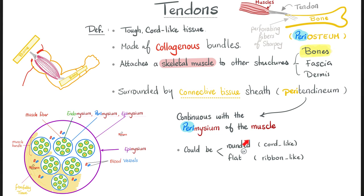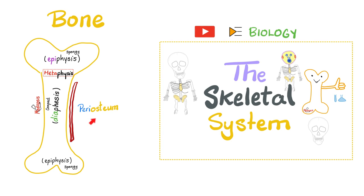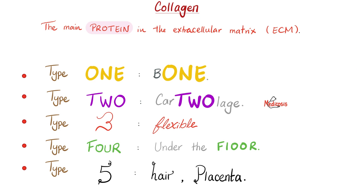Some tendons are rounded in shape — cord-like. Other tendons are flat — ribbon-like. If you want to learn about the periosteum, epiphysis, diaphysis, or metaphysis, I have a video about the skeletal system in my biology playlist. Let's review the different types of collagen. Type 1 collagen is in bone. Type 2 is in cartilage. Type 3 is very flexible, so you find it in blood vessels. Type 4 is under the floor — the basement membrane. Type 5, with its coiling action, is found in hair, placenta, etc.